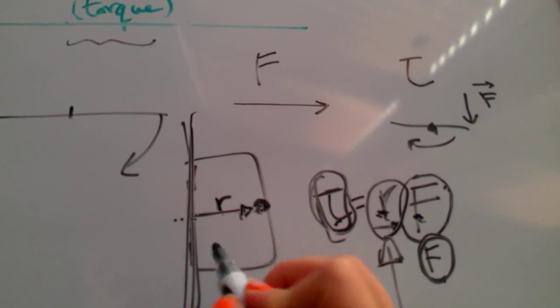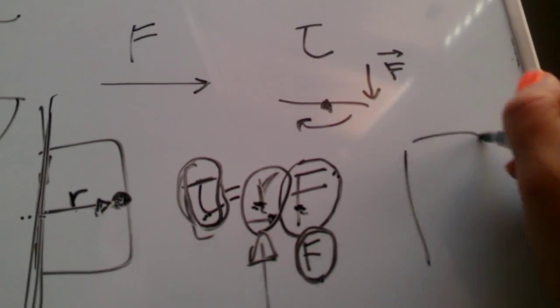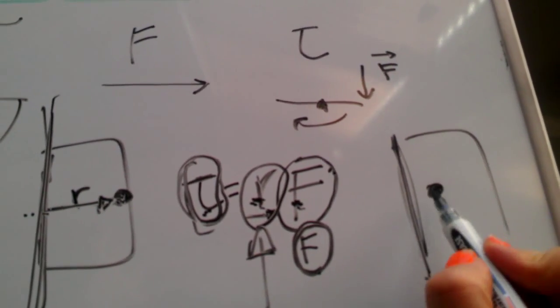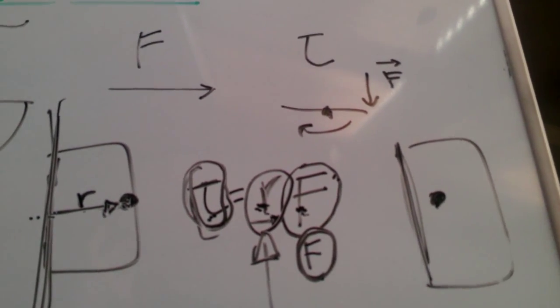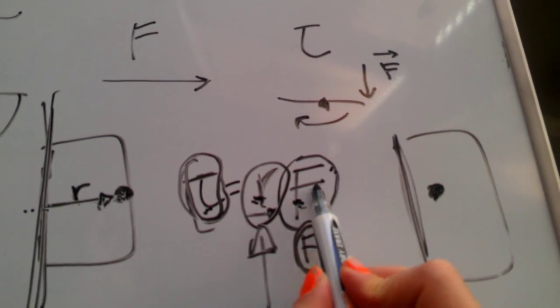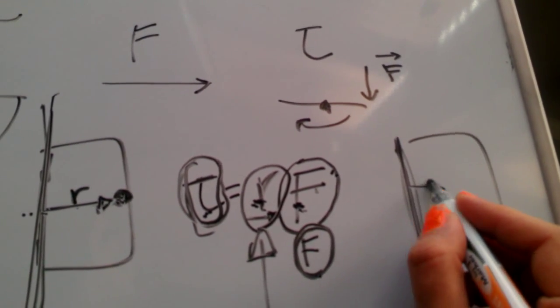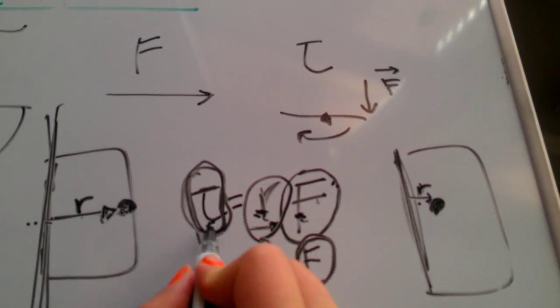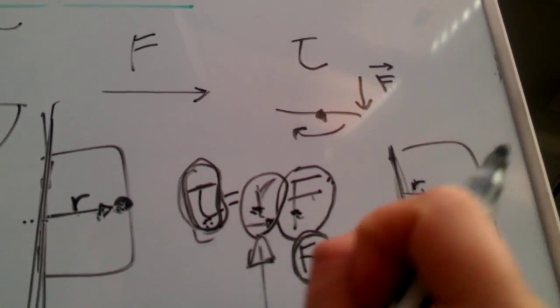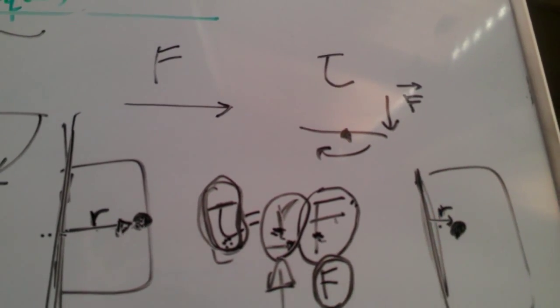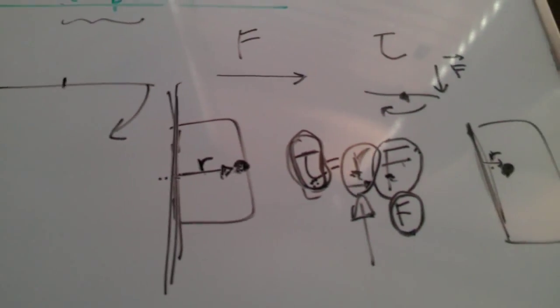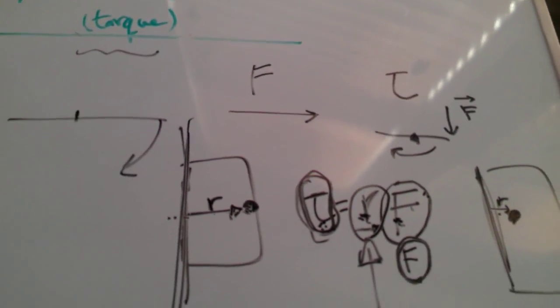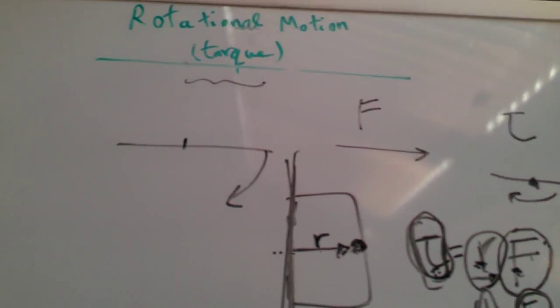Whereas if the knob of the door was like somewhere here and this was the hinge, then we would be needing a lot more force in order to make up for this little amount of lever arm such that we get the sufficient amount of torque in order to open and close the door. If you imagine, then it actually makes a lot of sense and it's very in sync with your common sense anyways.